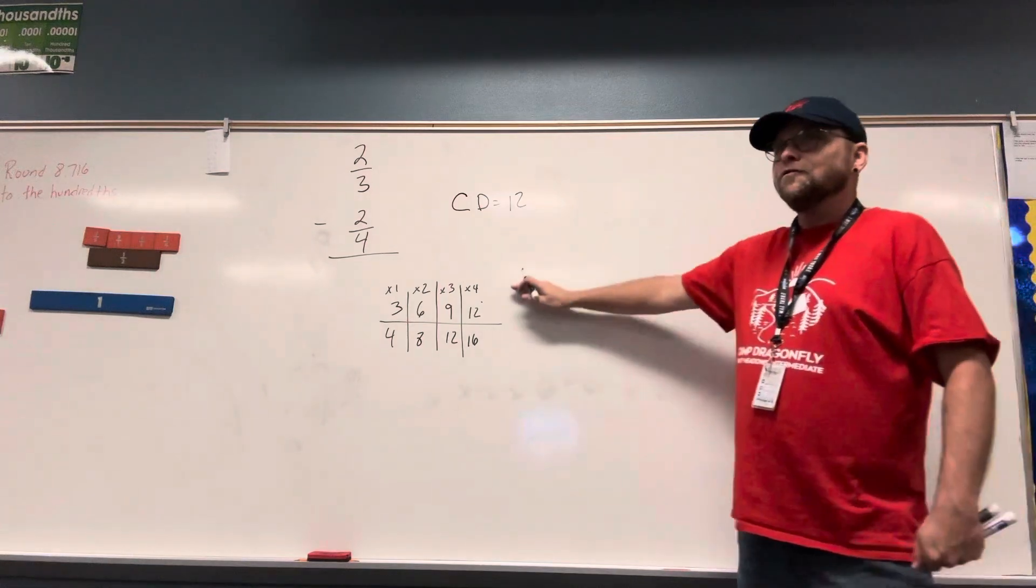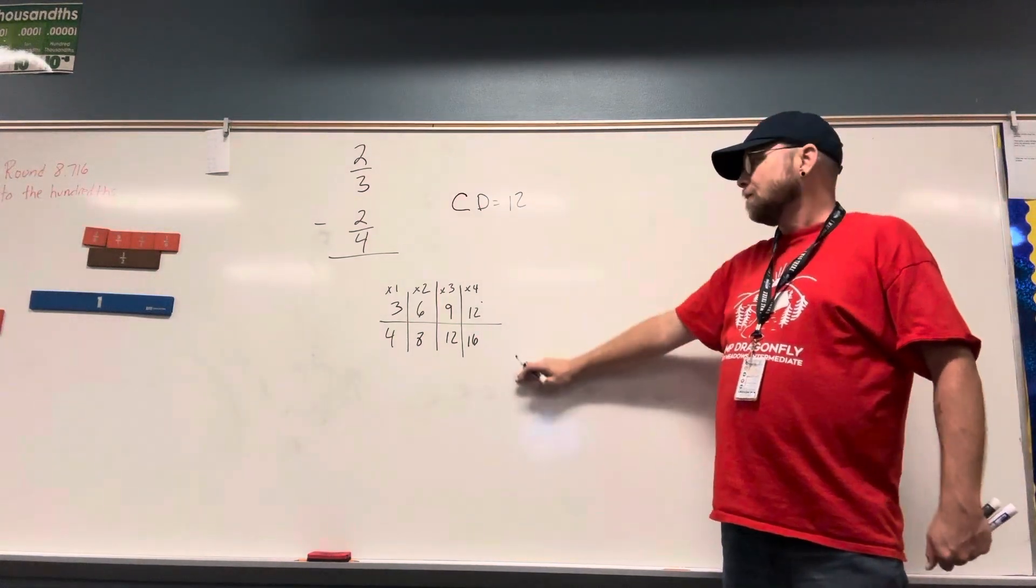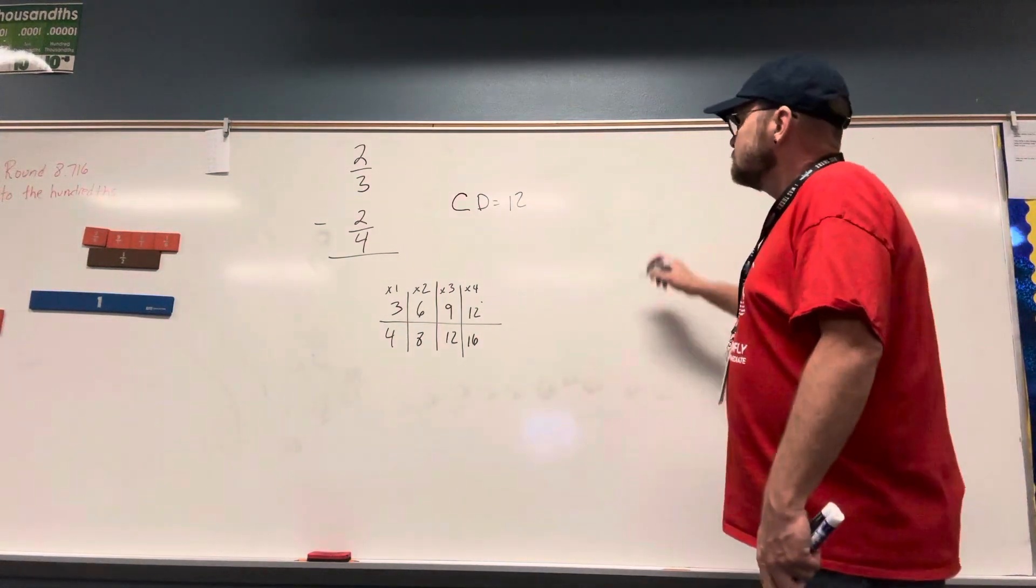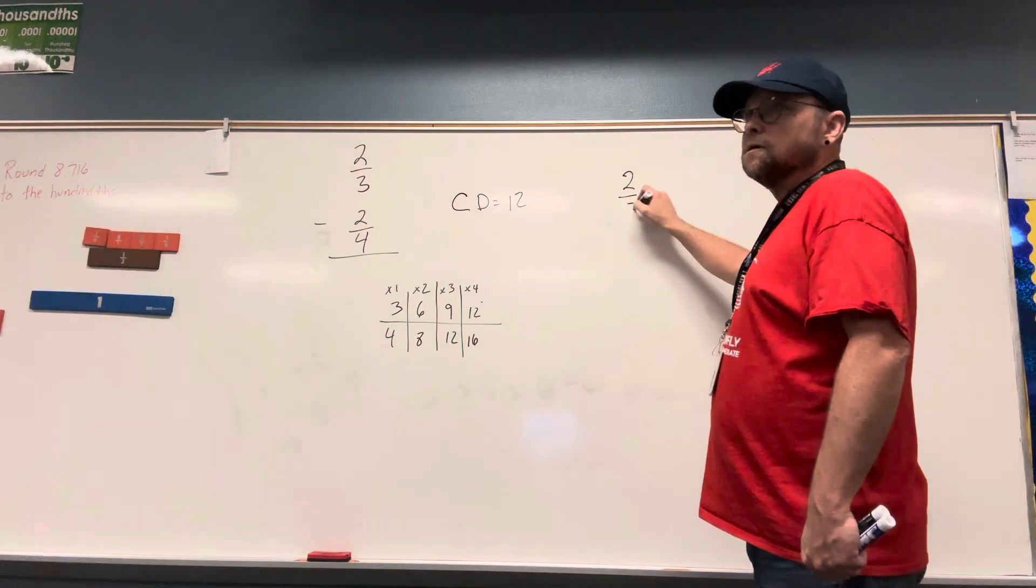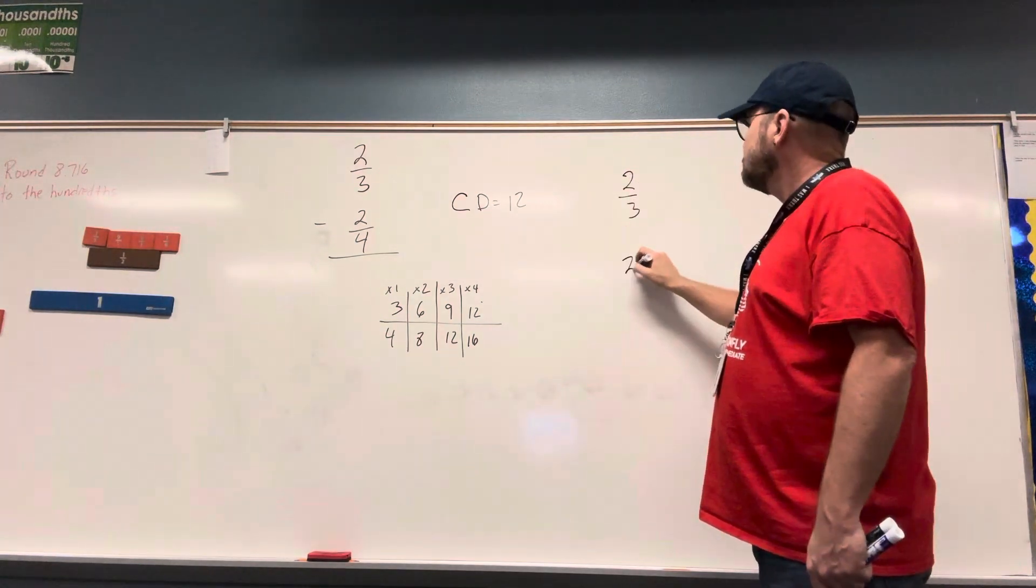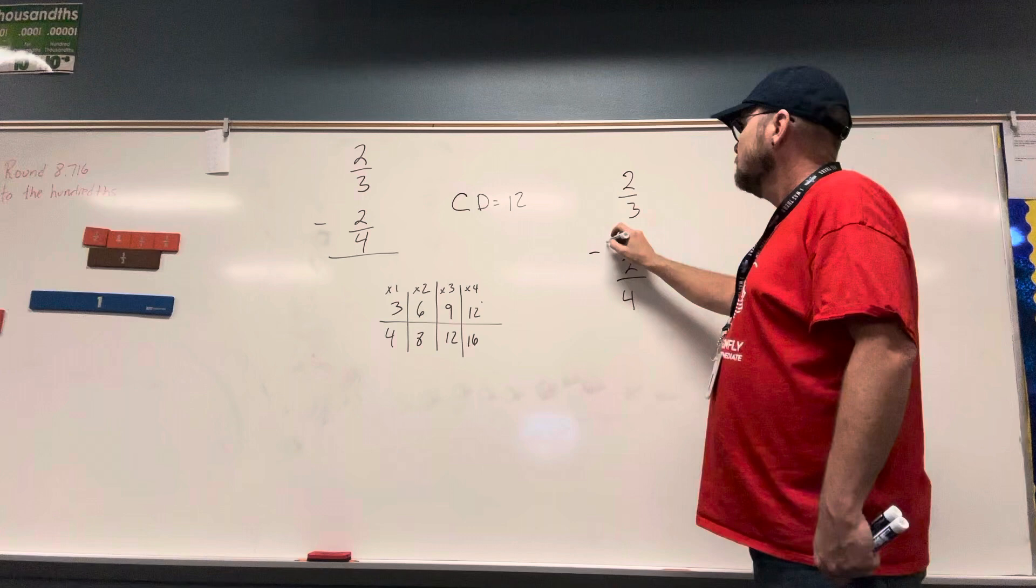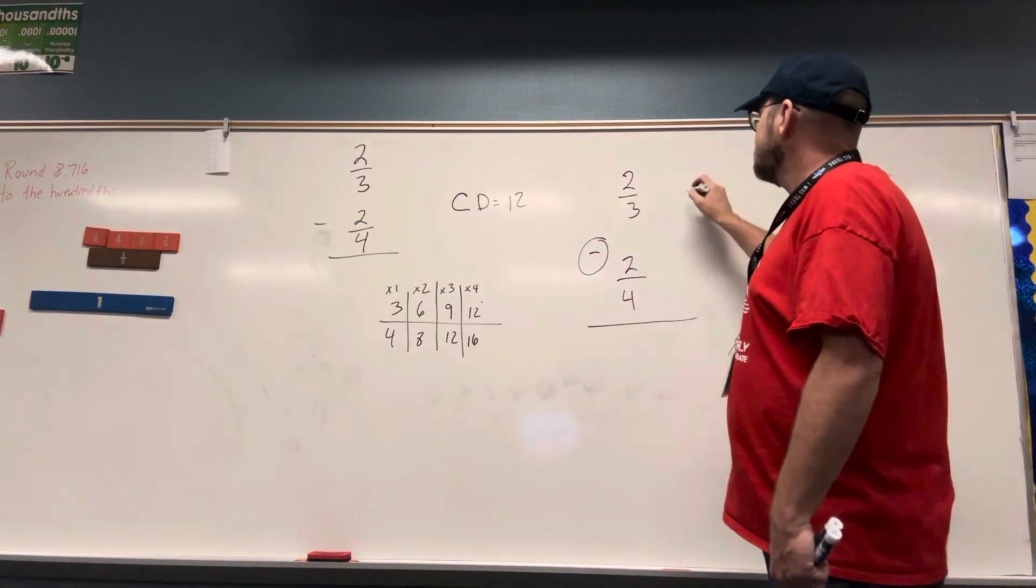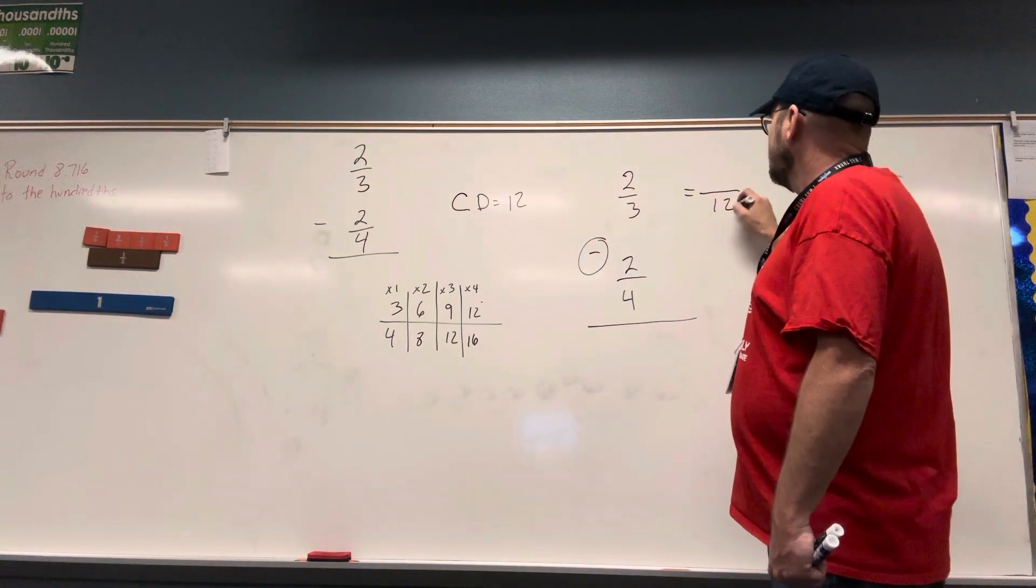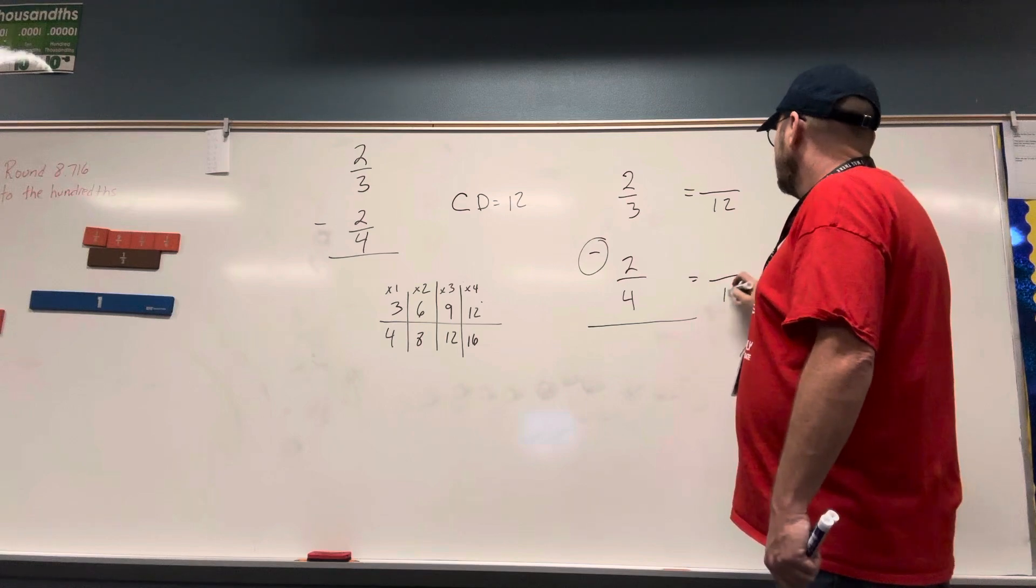12. This is helpful. So if I have 2 thirds and 2 fourths, pay attention to my sign of subtraction. I need to put this over 12.